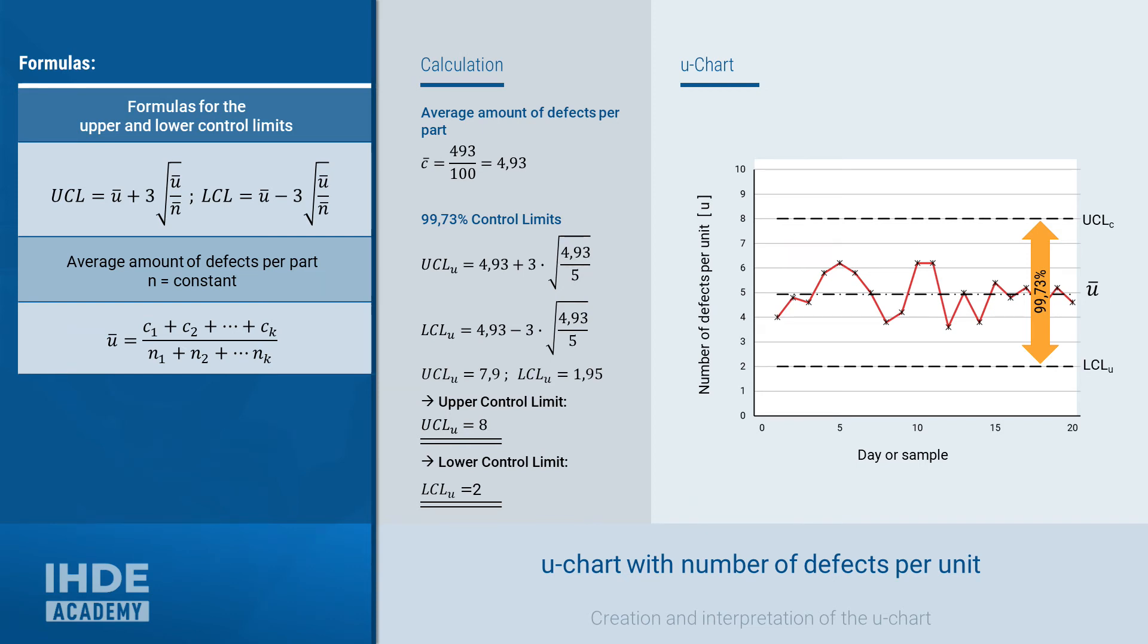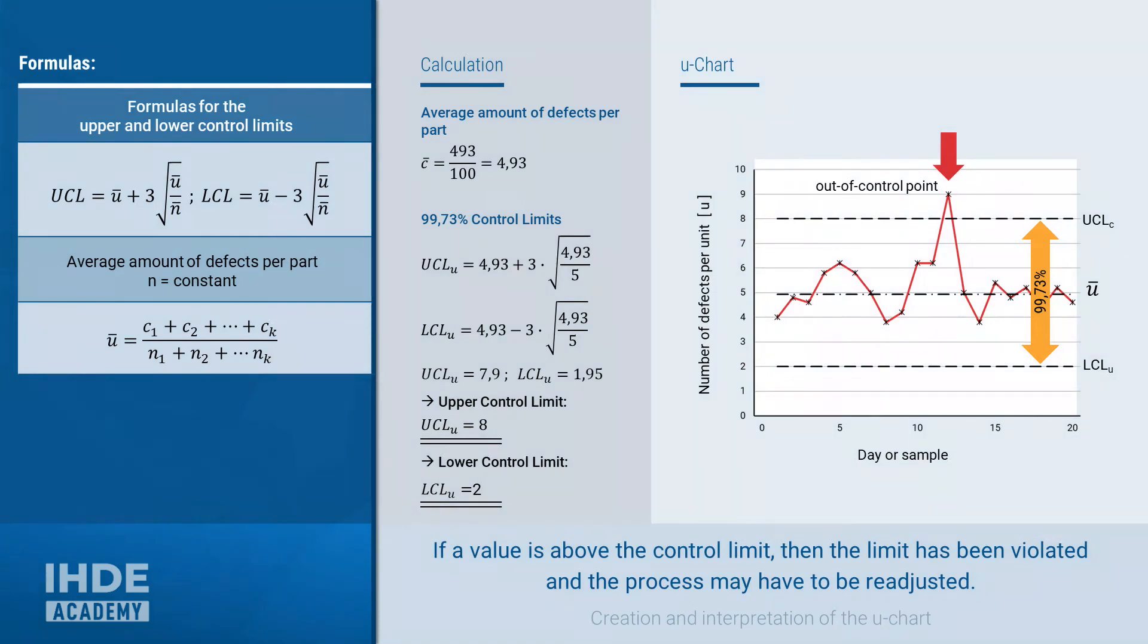The formula used here for the control limits is designed in such a way that the probability of non-interference in the process is 99.73%. This means that there is a 99.73% probability that all values will lie between the control limits. The probability that a control limit will be exceeded is less than 0.27%.